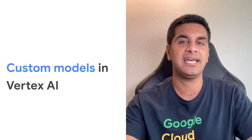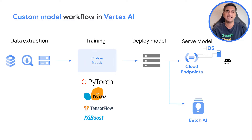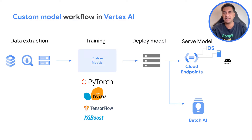Coming to custom modeling — as discussed, this is for more complex and niche use cases that cannot be solved with AutoML. You define your instance setup, upload your training data, extract it, build your own model, and train it on virtual machines of your choice. You have four pre-built container options: PyTorch, scikit-learn, TensorFlow, and XGBoost — or you can bring custom containers — and finally deploy your model and serve it via Cloud endpoints or batch AI for batch predictions, all from a single platform. Now let's head to the demo.